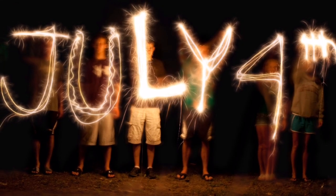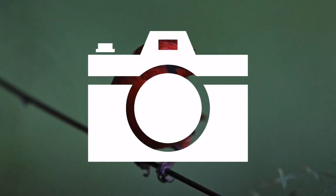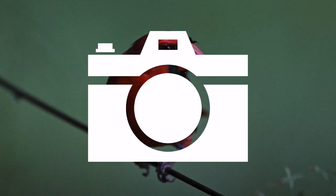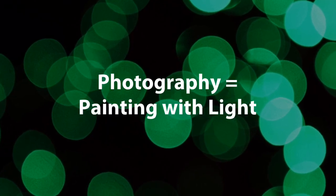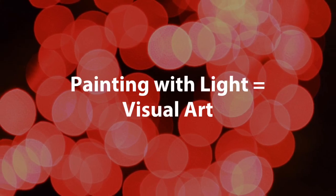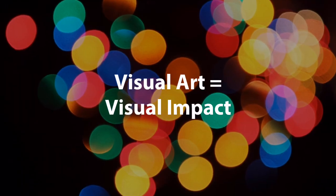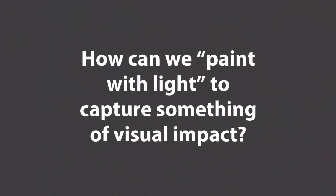Now when we say painting with light, we don't necessarily mean something like this. Rather, we're talking specifically about how the light comes through the lens of a camera and is captured, thus creating a piece of art. So if photography is painting with light, and painting with light is a form of visual art — something we can see — and art is something that impacts the viewer, then how can we paint with light to capture something that is visually impacting?